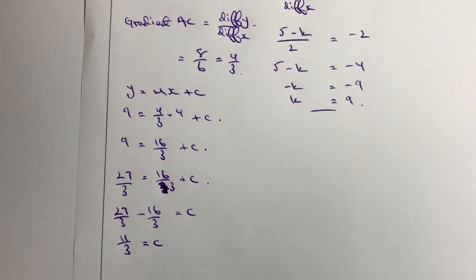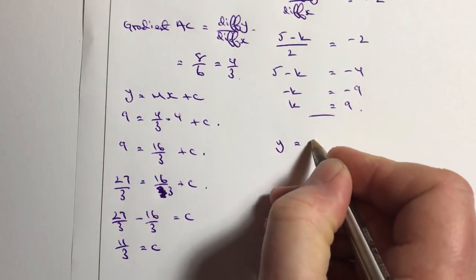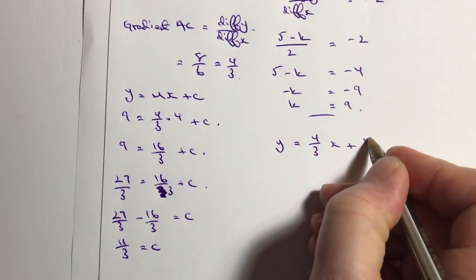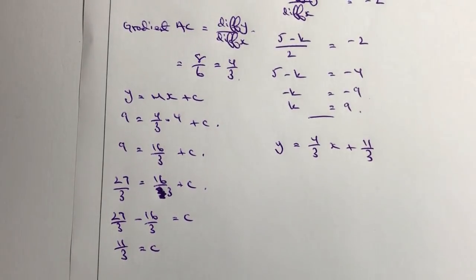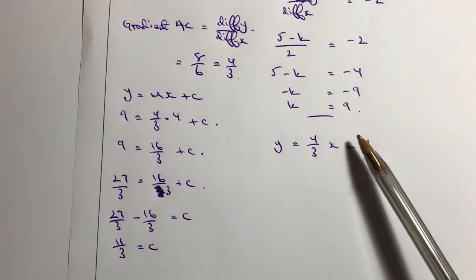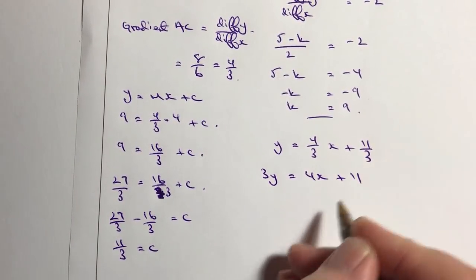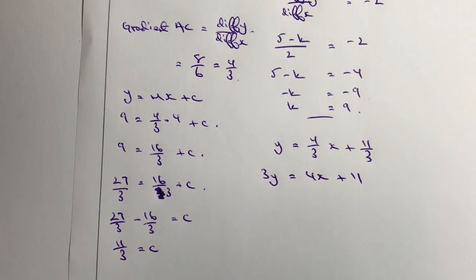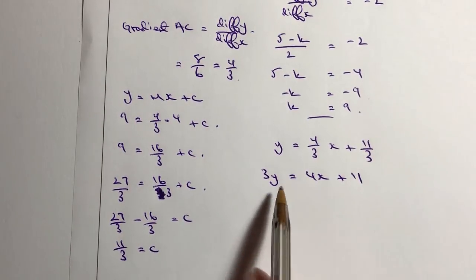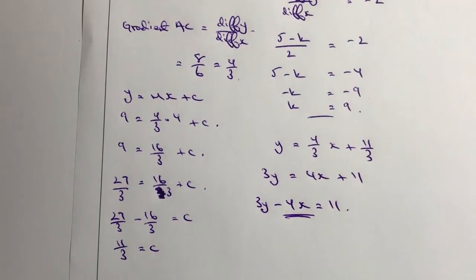So putting that together, the equation is y = (4/3)x + 11/3. Multiplying through by 3 to clear the denominators gives 3y = 4x + 11. Rearranging into the required form — with c after the equals sign — I bring the 4x over and get 3y minus 4x = 11. That's the answer.